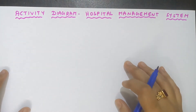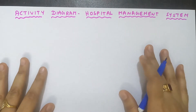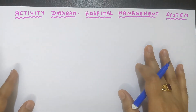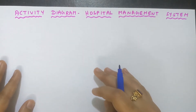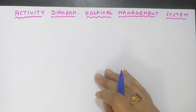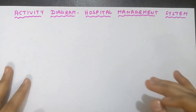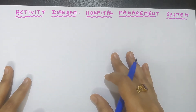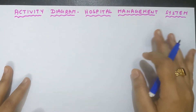In this video, we are going to learn how to draw the activity diagram for the hospital management system. Before watching this video, please watch the video attached in the description, where I have covered every single symbol used in the activity diagram — all the basics are there. After watching that, you'll get a good idea. Even in this video, I will be teaching from scratch, explaining every single step using the real-life example of a hospital management system.